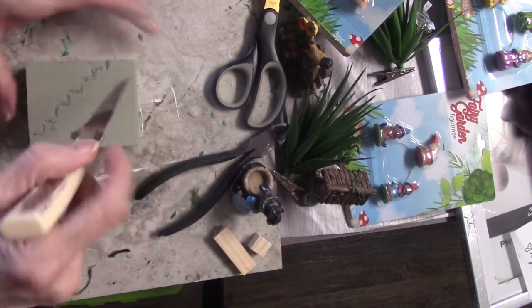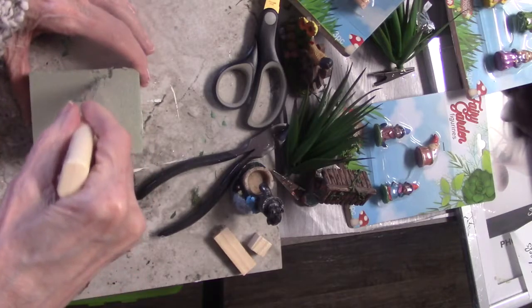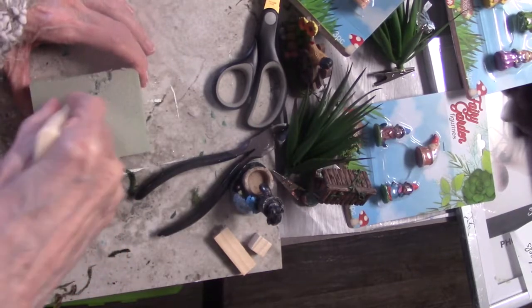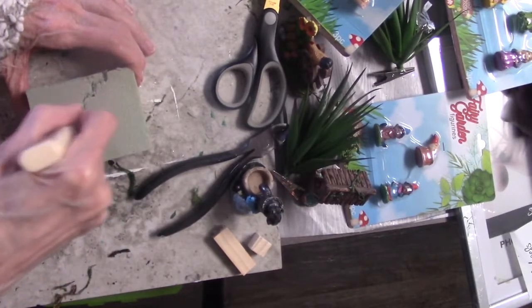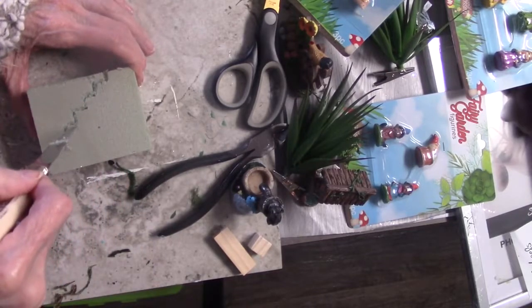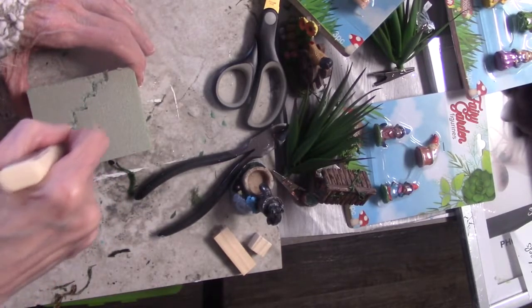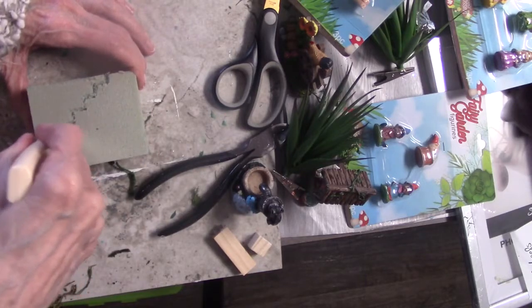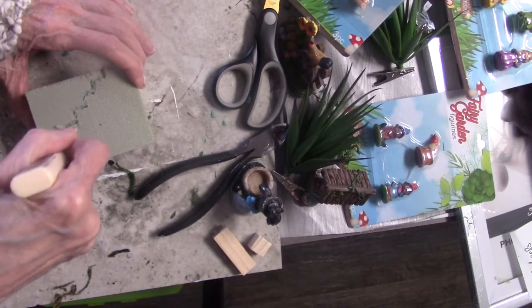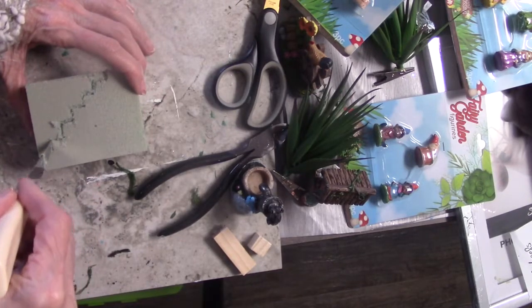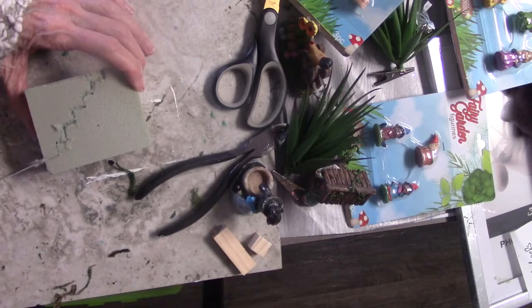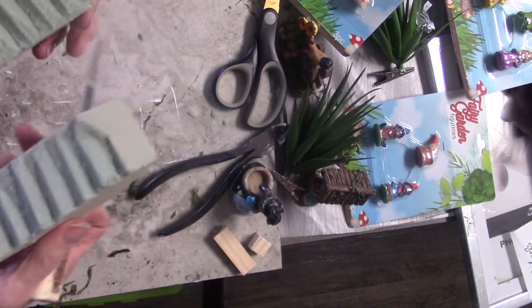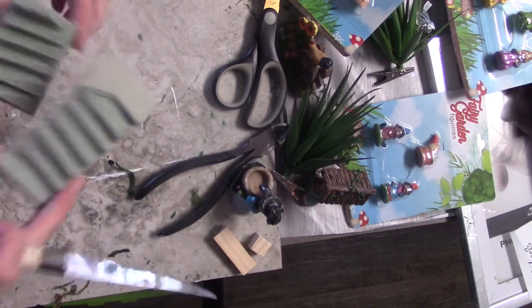Okay, I'm making some little stairs out of some floral moss. Just using a knife to make the stairs. And there you have some stairs. And then I'm just going to cut that little piece off at the top.